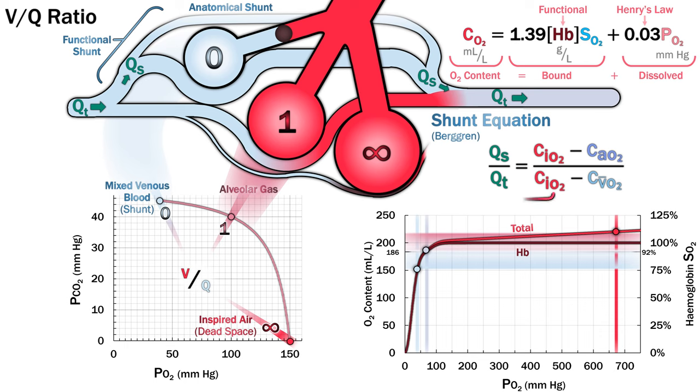You can calculate the estimated fraction of shunted blood using this equation. The term CIO2 is the oxygen content of ideal alveolar and capillary blood, calculated using the alveolar gas equation and the oxygen content equation above. The CVO2 is mixed venous oxygen content, which can be calculated with measured or assumed values.